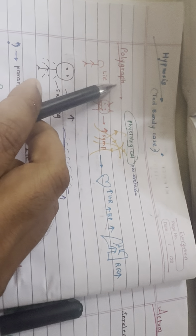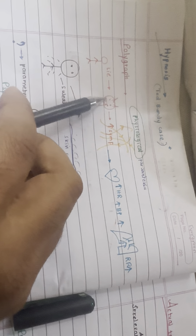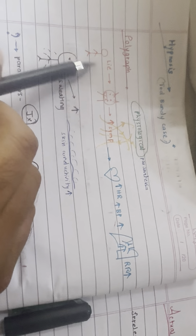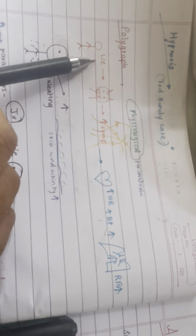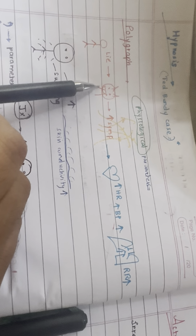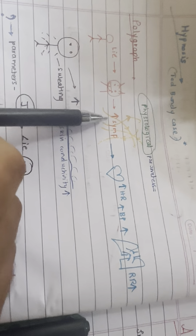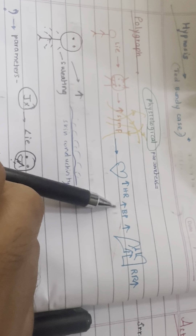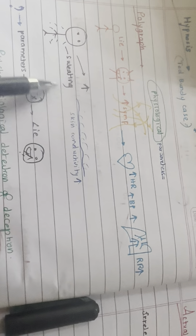Polygraph, or lie detector. The principle is: if a person is speaking a lie, they experience fear, which causes increased sympathetic activity — including increased heart rate and increased blood pressure.